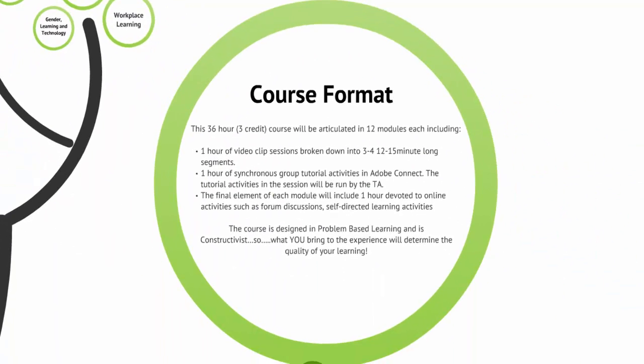The course is a 36-hour, three-credit course delivered in 12 modules. Each module will have video clip sessions — approximately one hour broken down into three clips that you can view asynchronously on your own time. There will also be a one-hour synchronous group tutorial that you can register for; you must be physically present in those sessions. They will be run by the TA and connect directly to the synthesis questions and topics from the videos. The final element of each module will be time devoted to online activities such as self-directed learning, forum discussions, and problem-based learning components.